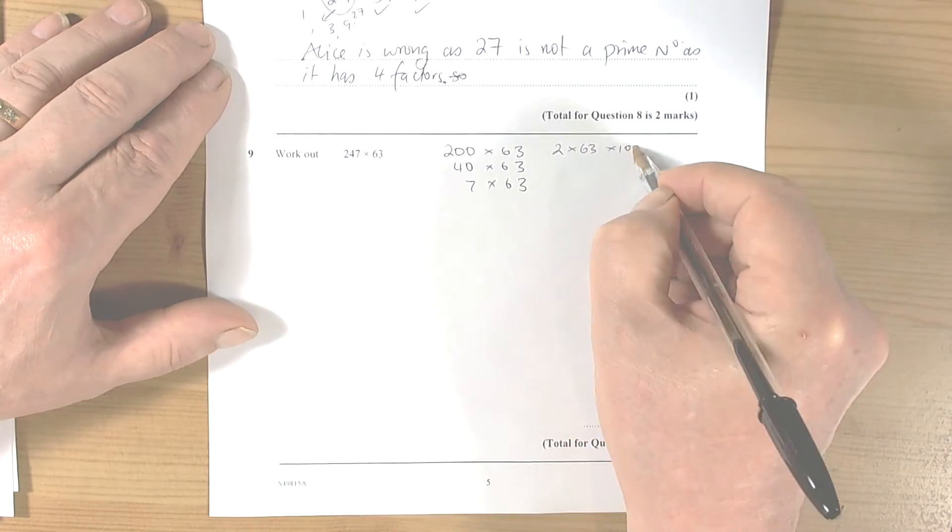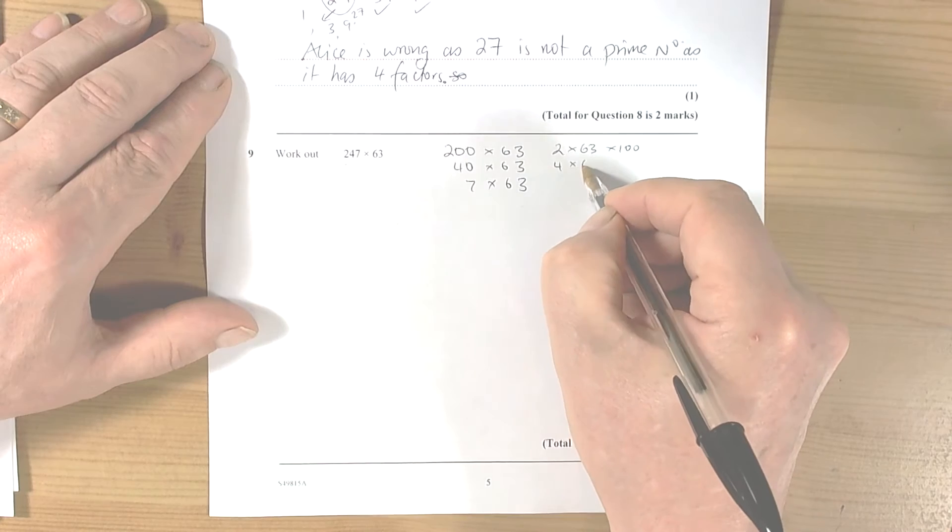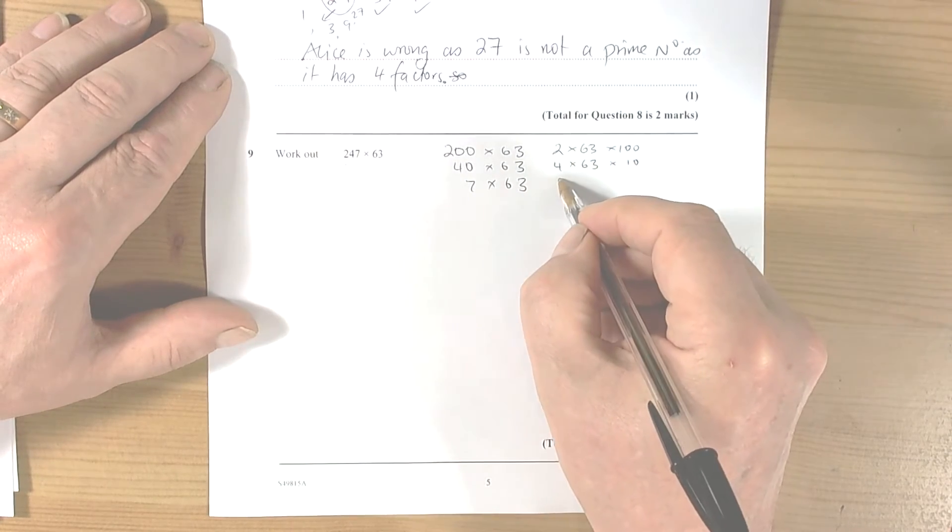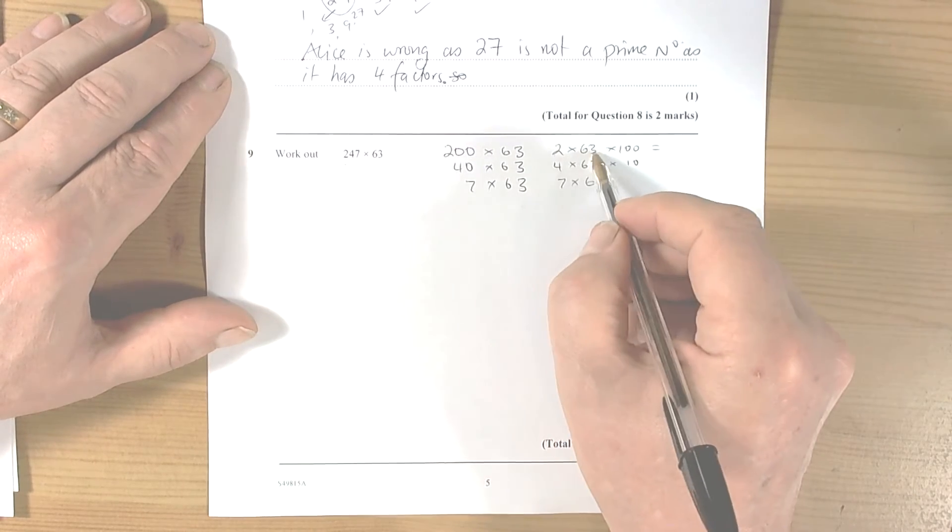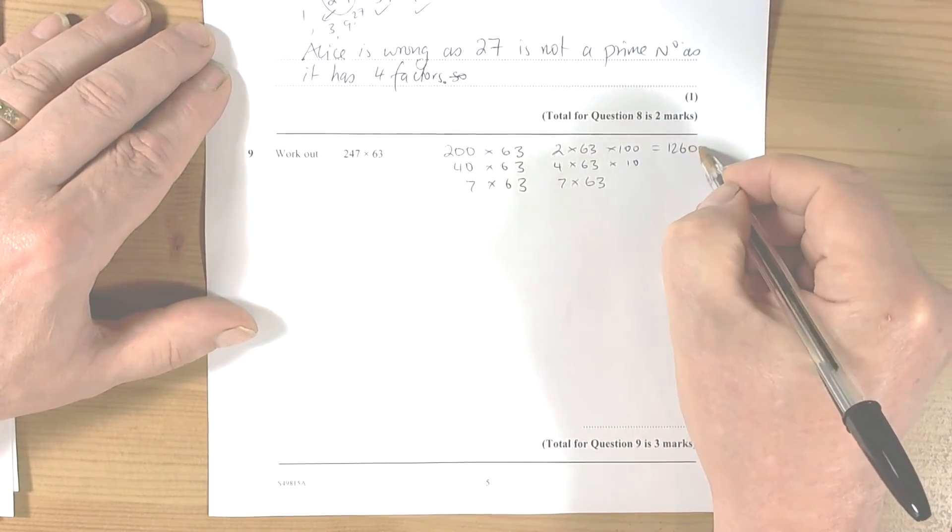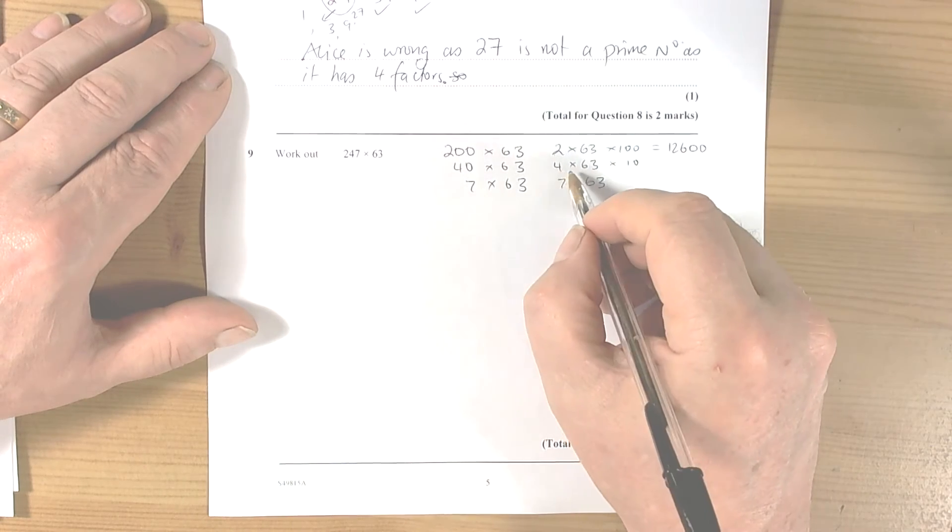And then times by 10 and 7 times 63 is what it is. So there's lots of ways to do this. 2 times 63 is 126, and then you times by 100, which means you move up twice to become 12,600.